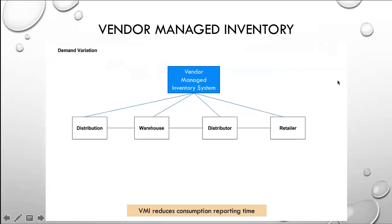VMI stands for Vendor Managed Inventory, and this is something that has become very popular with the advent of computer systems and ERP, Enterprise Resource Planning Systems. You also have MRPs, which is Material Resource Planning. Sometimes I hear it called Manufacturing Resource Planning — they're both valid.